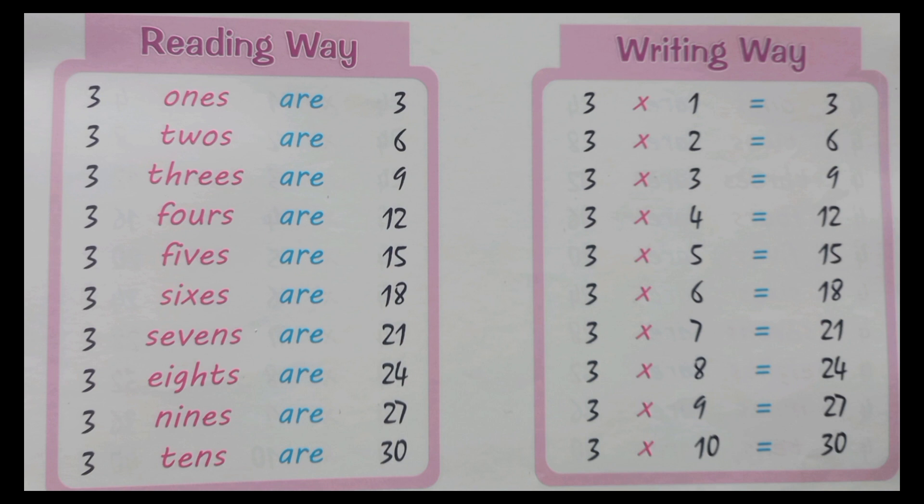Three, six's a eighteen. Three, seven's a twenty-one. Three, eight's a twenty-four. Three, nine's a twenty-seven. Three, ten's a thirty.